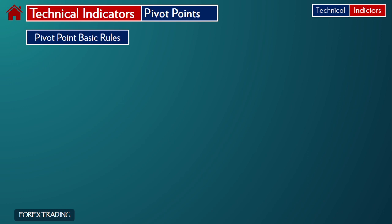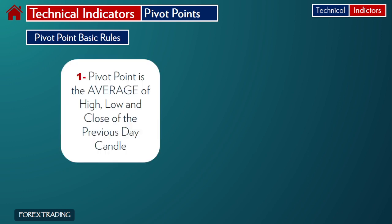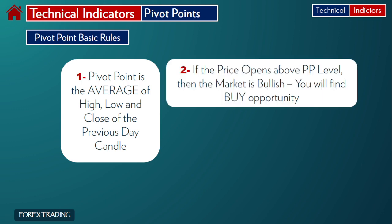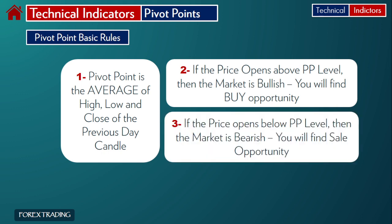Number one: pivot point is the average of high, low, and close of the previous day candle. Number two: if the price opens above the PP level on the next day, then the market is bullish and you will find a buy opportunity. Number three: if the price opens below the PP level the next day, then the market is bearish and you will find a sell opportunity.